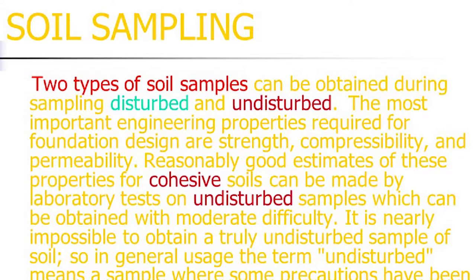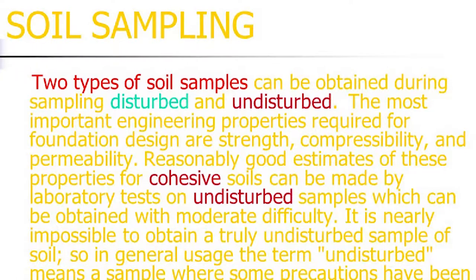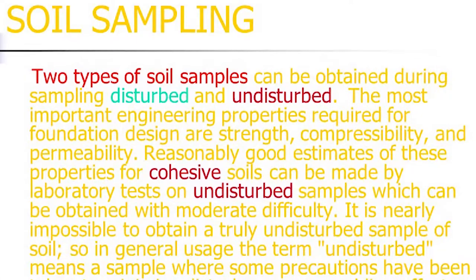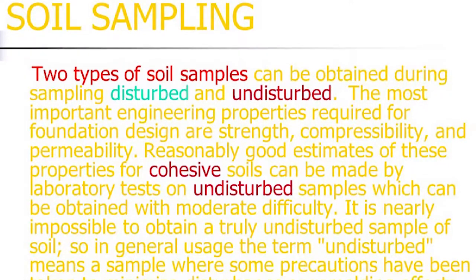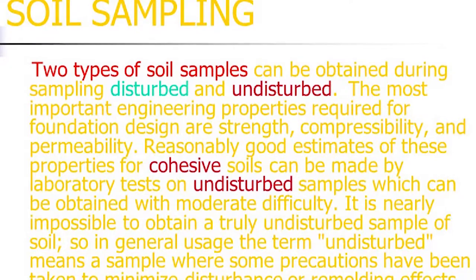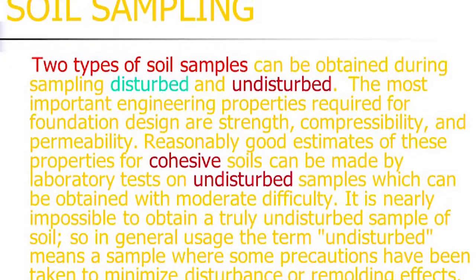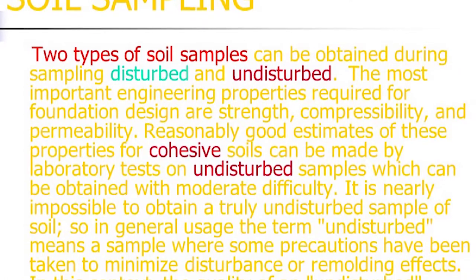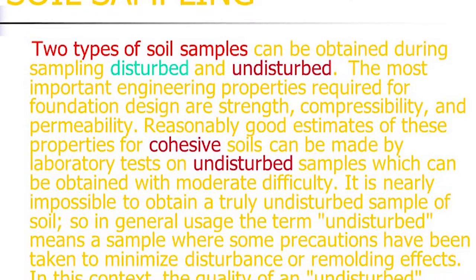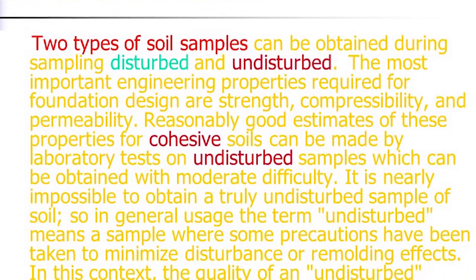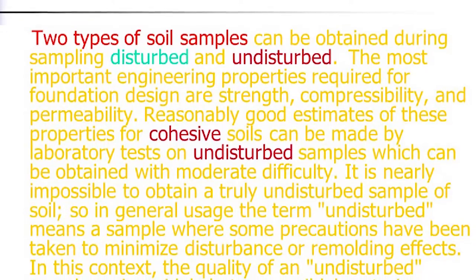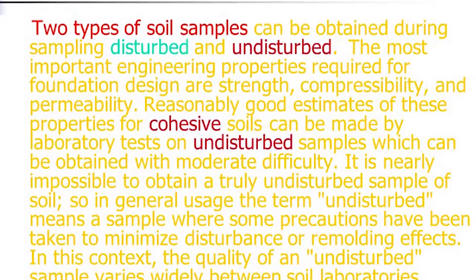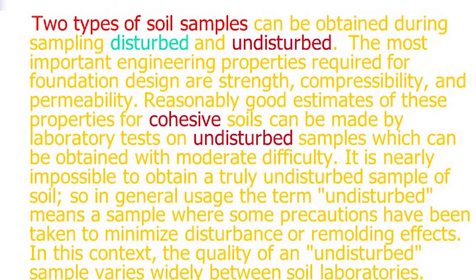Two types of soil samples exist: disturbed and undisturbed. The most important engineering properties required for foundation design are strength, compressibility, and permeability. Reasonably good estimates of these properties for cohesive soils can be made from laboratory tests on undisturbed soil samples, which can be obtained with moderate difficulty. It is nearly impossible to obtain a truly undisturbed sample, so in practice 'undisturbed' means a sample where precautions have been taken to minimize disturbance to the original structure.